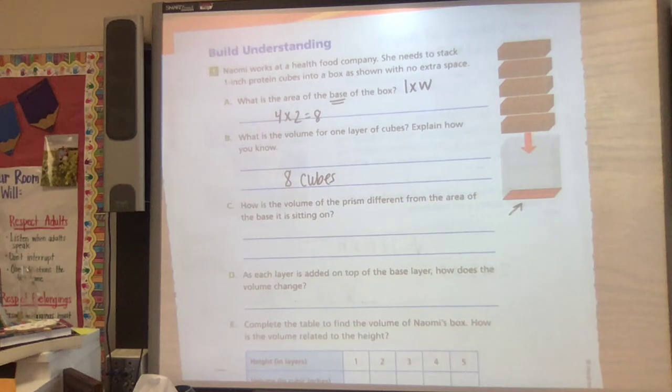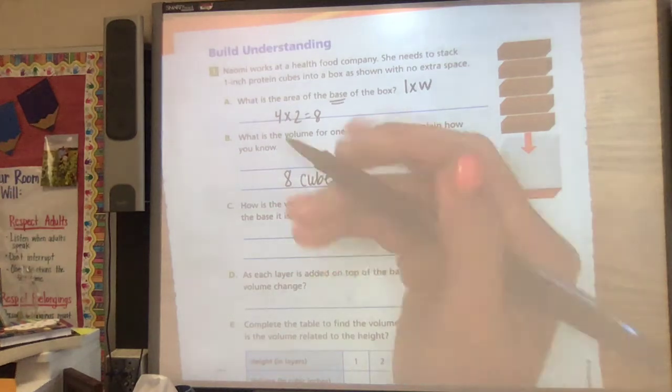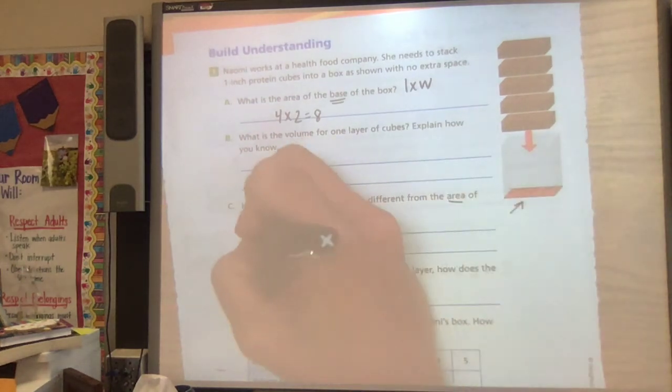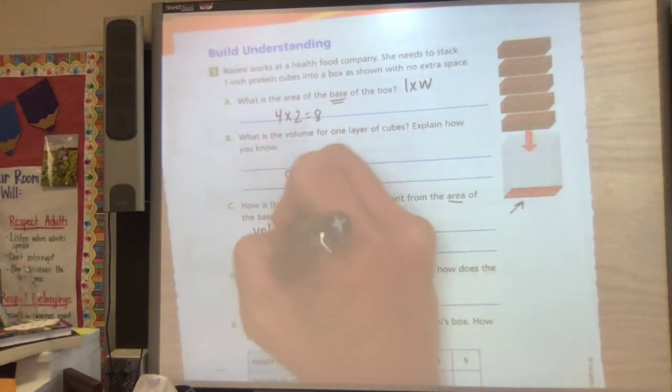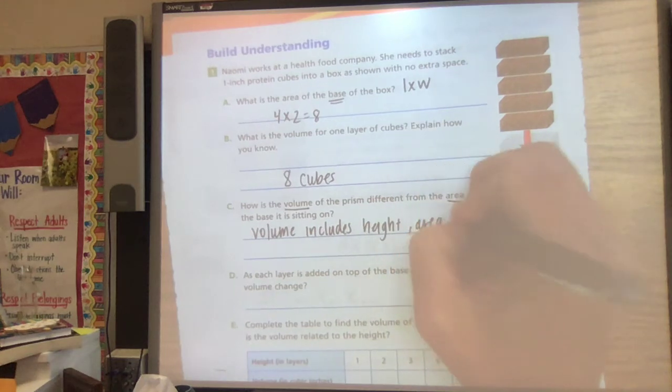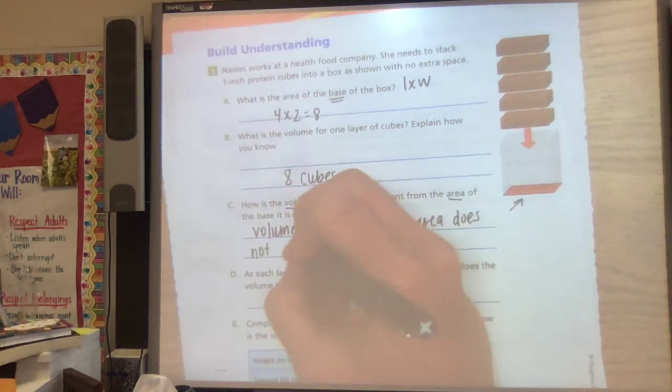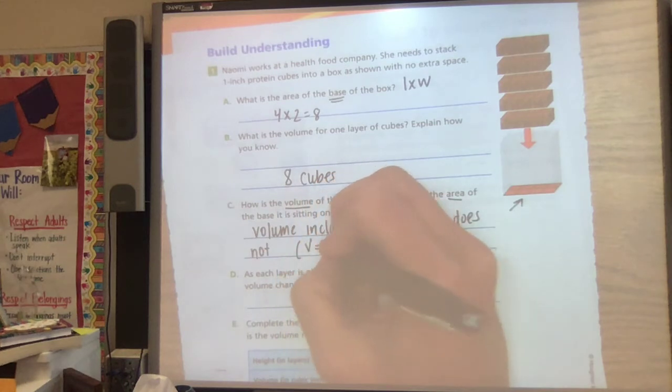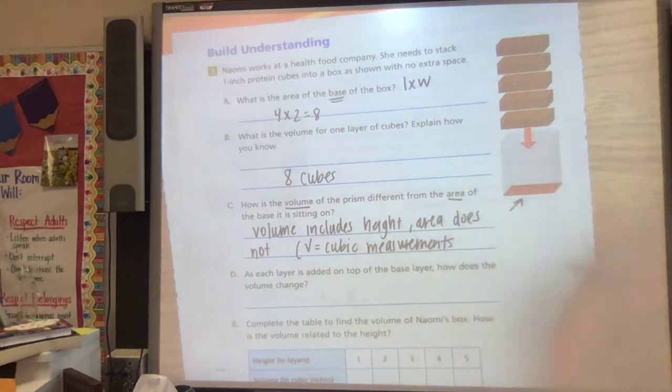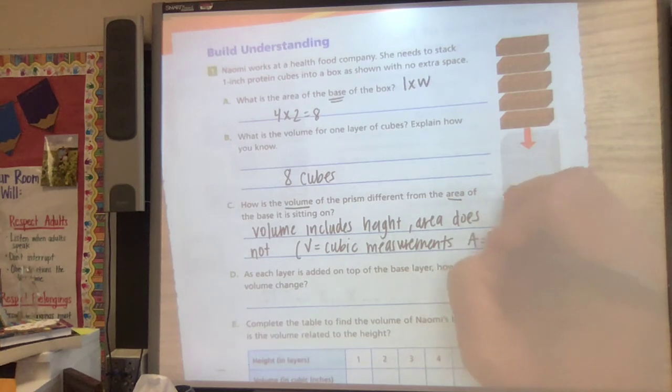How is the volume of the prism different from the area of the base it is sitting on? So how is volume different than area? There's lots of different things you could say, but volume includes height. Area does not. Volume is in cubic measurements and area is not. Area is in square because it's two-dimensional.